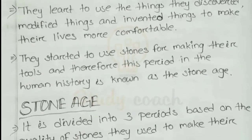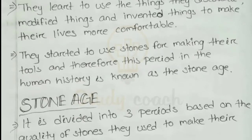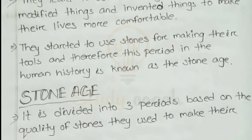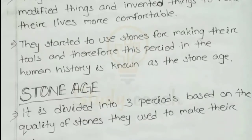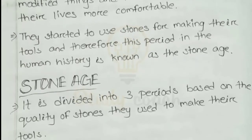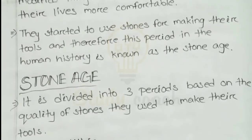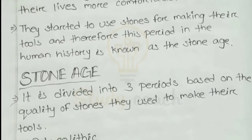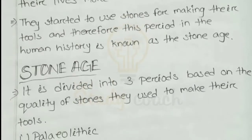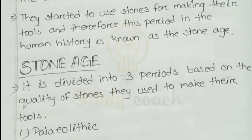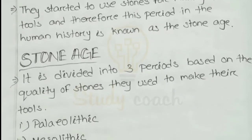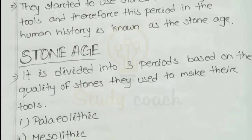Humans are well known. They learned to use the things they discovered, modified things, and invented things to make their lives more comfortable. Early humans used many things, modified them, discovered many things, and invented many things to make their lives more easy and comfortable. They started to use stones for making their tools, and therefore this period in human history is known as the Stone Age.